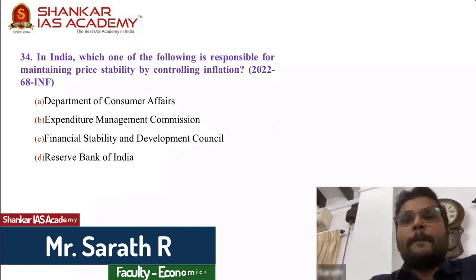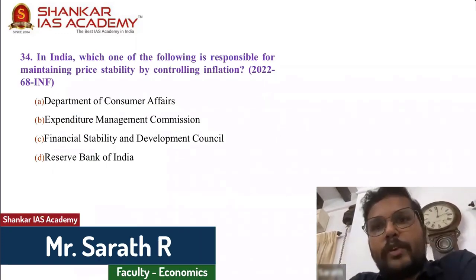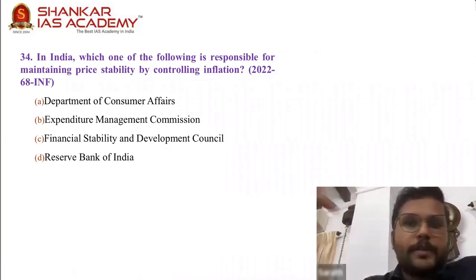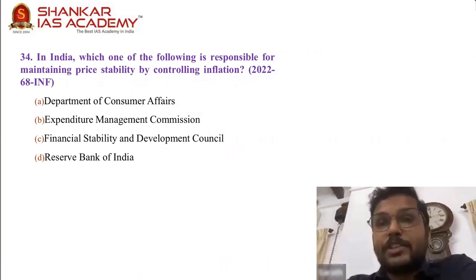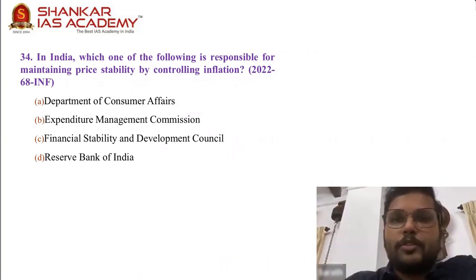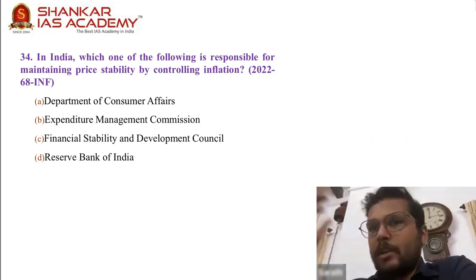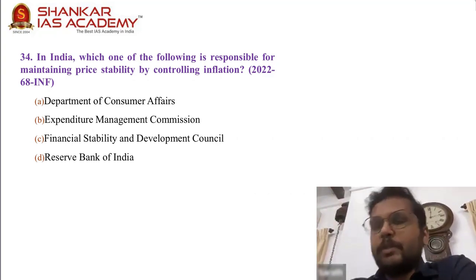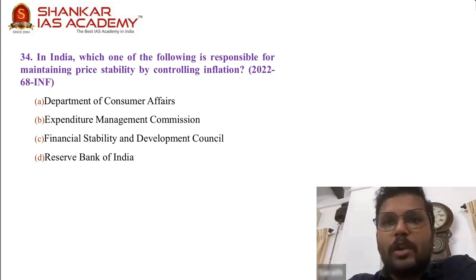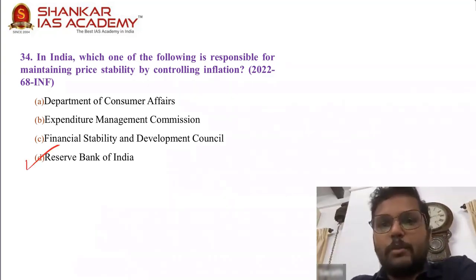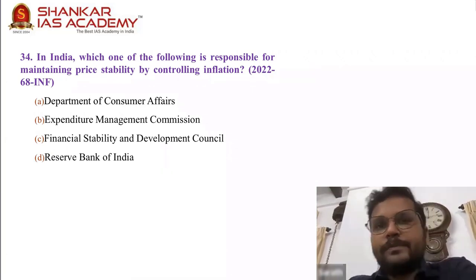Question 34: In India, which one of the following is responsible for maintaining price stability by controlling inflation? The function and objective of RBI itself is to maintain price stability. From 2016 onwards, controlling inflation has become their primary responsibility through the Monetary Policy Committee. Reserve Bank of India is the answer. 34, D.